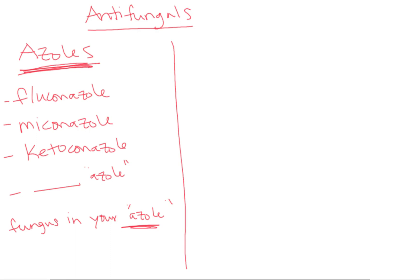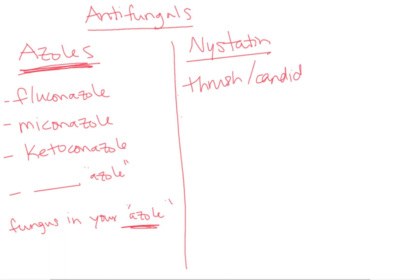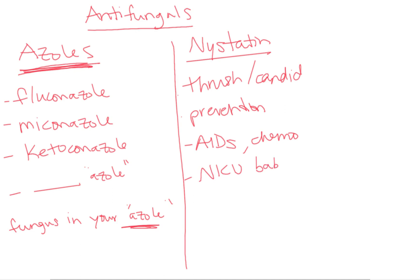Another antifungal is Nystatin. I remember that one because of how I use it. It's used for mild thrush and candida, and I use it a lot for prevention of thrush. People who are immunocompromised get this a lot — people with AIDS, people on chemo. I gave this in the NICU a lot to babies whose immune systems weren't totally developed yet.